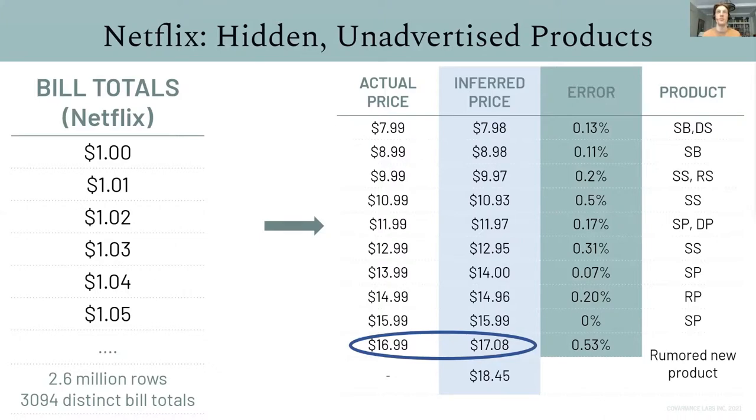But there were news articles that Netflix had a rumored limited-release, ultra-high-definition streaming package, and that was priced at $1,699. So, what's cool here is that our method discovered an unadvertised product.